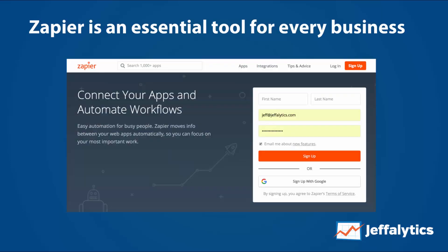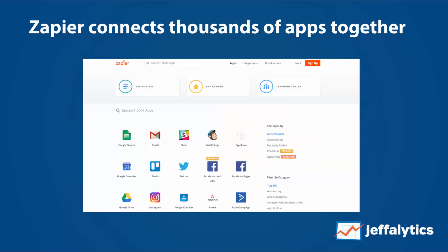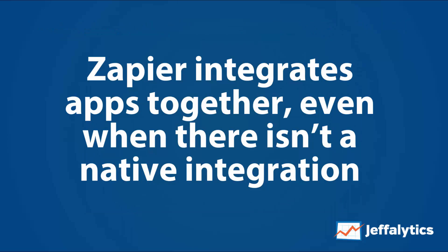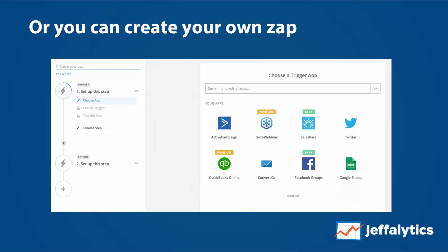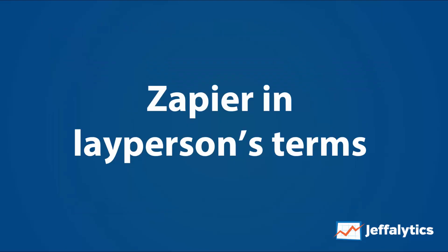Zapier is an essential tool for just about any business out there. What Zapier does is connect thousands of apps together and integrate them even when there's not a native integration. A lot of apps will integrate with other apps once or twice, but they don't do it consistently and it doesn't always work with your technology stack. Zapier is the one that connects when something else doesn't have a native integration. You can connect your apps using recipes, or they call them zaps.